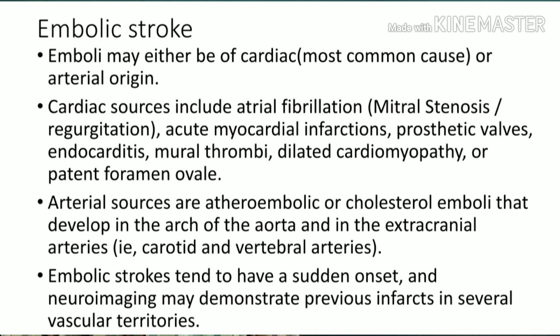The second important cause in ischemic stroke is embolic stroke. Emboli normally originate from the heart — for example, a left atrial or left ventricular thrombus in patients with atrial fibrillation or regional wall motion abnormality. The thrombus can dislodge, enter systemic circulation, travel to the carotid or cerebral arteries, and cause a blockage. Cardiac causes include atrial fibrillation, acute MI, prosthetic valve, infective endocarditis, mural thrombus, and dilated cardiomyopathy.